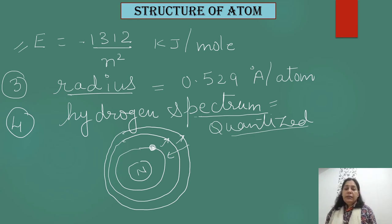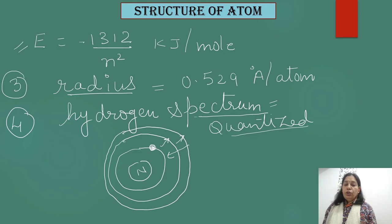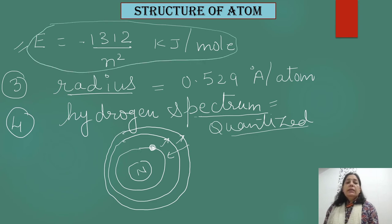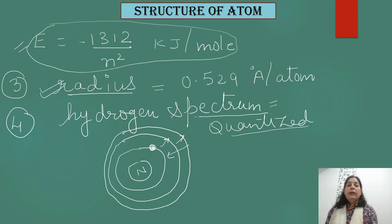In our next video, we will discuss in detail the hydrogen spectrum and what types of radiations are emitted during absorption and emission of energy. To summarize the successes: Bohr's model explained the stability of the atom, allowed calculation of energy associated with each orbit, allowed calculation of the radius of each orbit, and explained the hydrogen spectrum formed when external energy is provided.